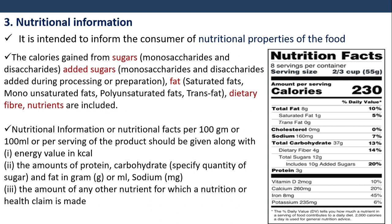Nutritional information is intended to inform the consumer of the nutritional properties of the food. It includes calories from sugars, added sugars, fat, and dietary fiber. Nutritional information or nutritional facts per 100 gram or 100 ml or per serving of the product should be given, along with energy value in kilocalories, the amounts of protein, carbohydrates, and fat in grams or ml, sodium in mg, and the amount of any nutrient for which a nutrition or health claim is made.